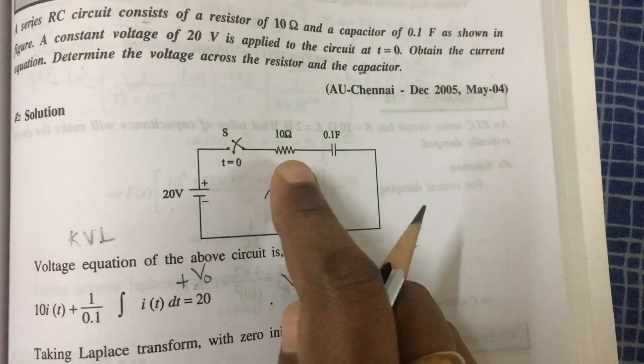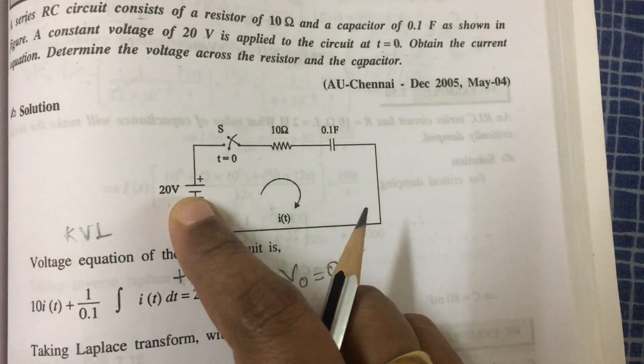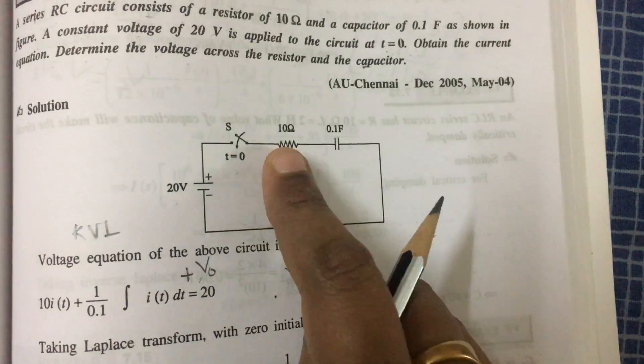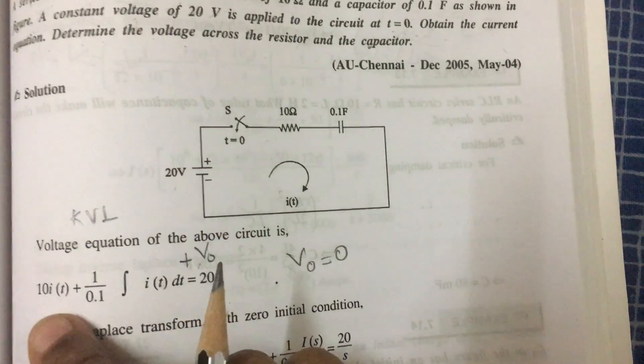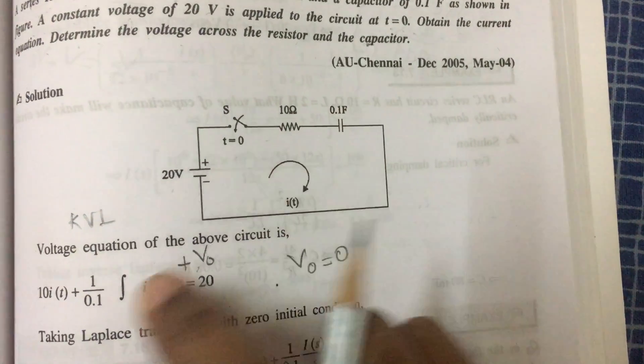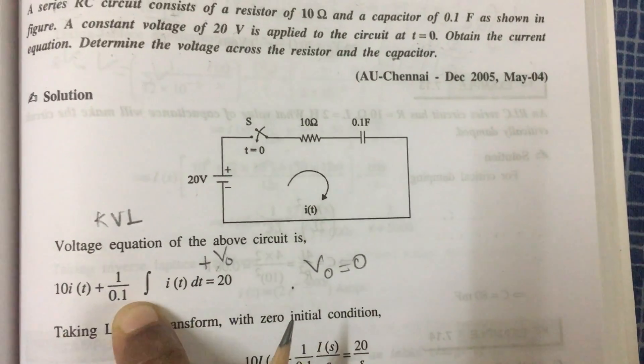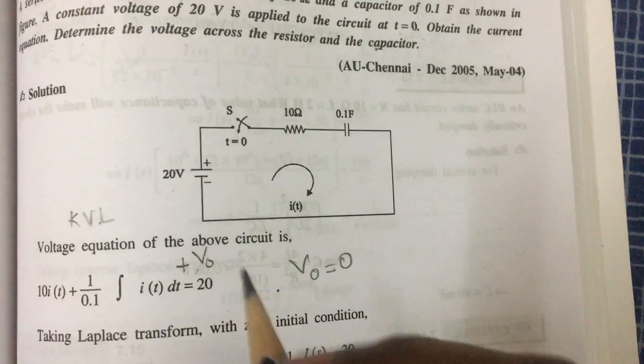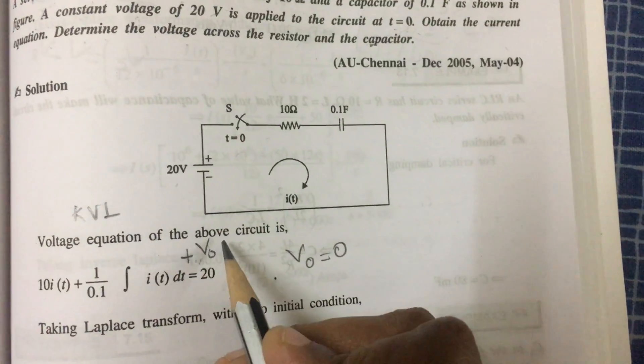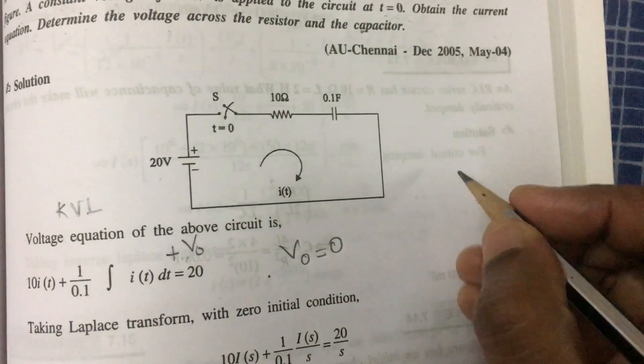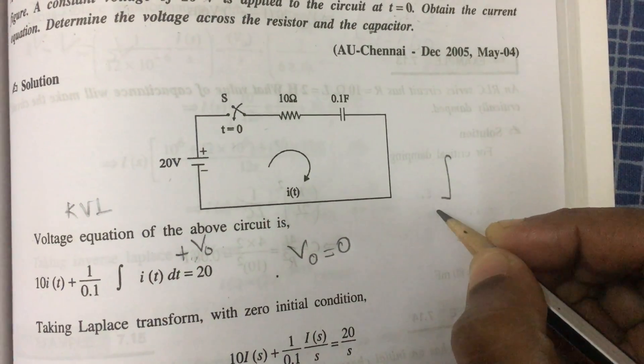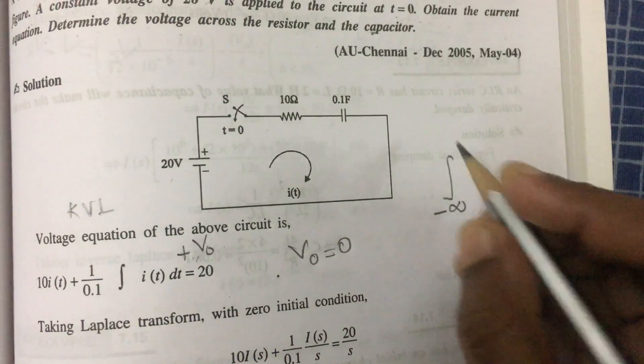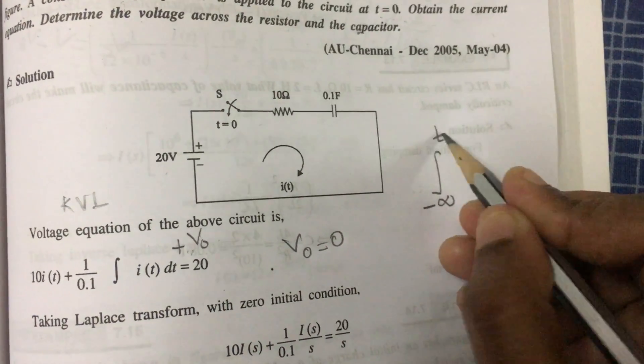The voltage rises, so 20 equals the dropping element: 10 into i(t), that is the voltage across the resistor is 10 into i(t), plus 1 by C. The voltage across the capacitor is 1 by C integral i(t) dt plus V0. There will be V0, a constant value, because of integration. It is from minus infinity to t.